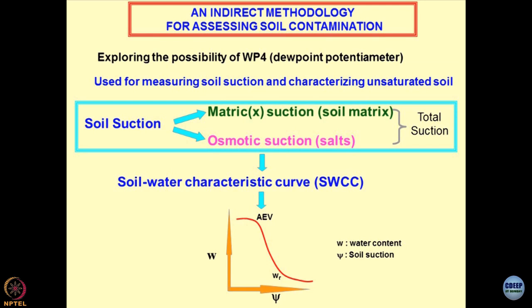If you take an undisturbed sample from the field, you can cut it into small pieces and use WP4 or a pressure membrane extractor to obtain the suction. ψ corresponds to total suction and W corresponds to moisture content; θ is the volumetric moisture content. You can plot a relationship between moisture content and suction.